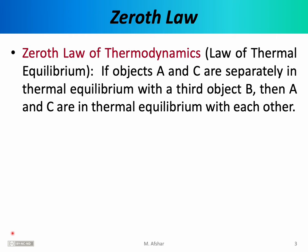The concept of thermal equilibrium finds its utility in the zeroth law of thermodynamics. This law used to be known as the law of thermal equilibrium, but after the first, second, and third laws of thermodynamics were formulated, people gradually realized that this law is also quite important and serves a foundational purpose. So people started calling it the zeroth law of thermodynamics. The law states that if objects A and C are separately in thermal equilibrium with a third object B, then A and C are in thermal equilibrium with each other.